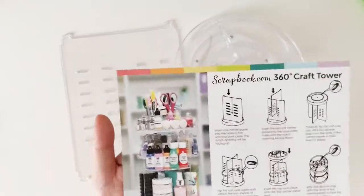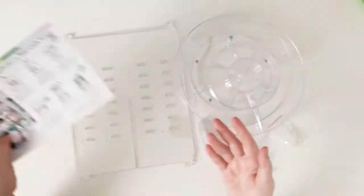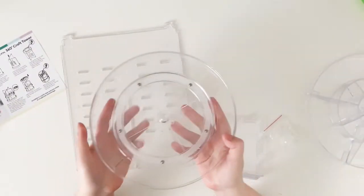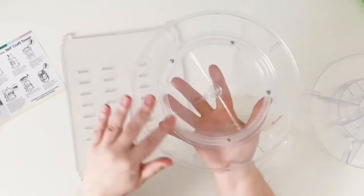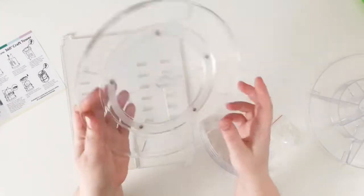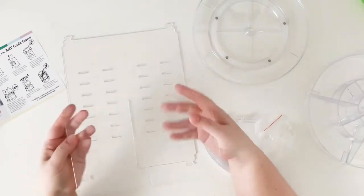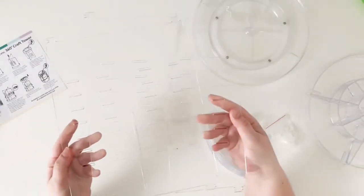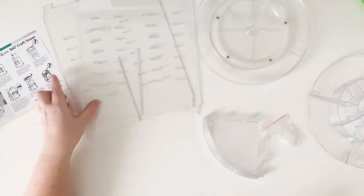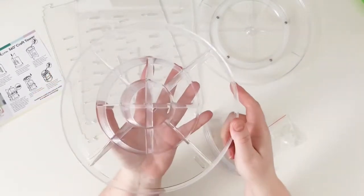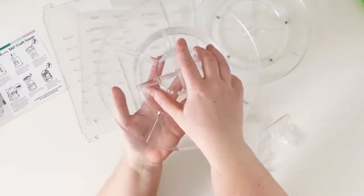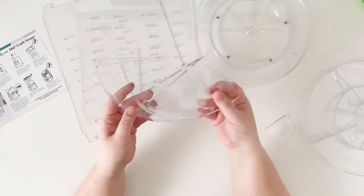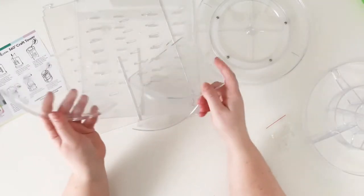Hello friends, it's Anna here. Today I'm going to show you the new scrapbook.com 360 degree craft tower. This is something you can put on your desk and it's a perfect way of storing your crafty supplies that you need to have on hand. You can purchase either the clear one or the white plastic one, and I chose the clear one.